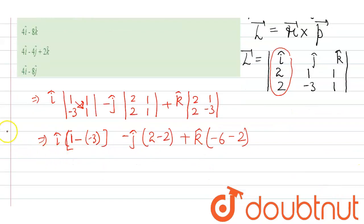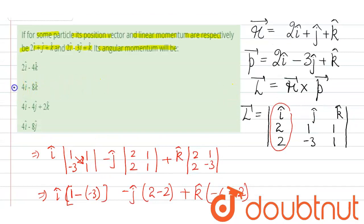So on solving here we get L vector is equal to 4i cap minus 0j cap minus 8k cap. That means the correct option will be option B.